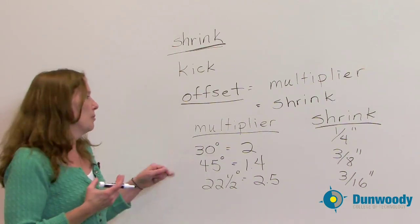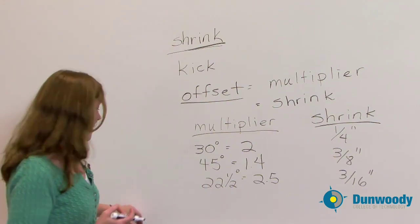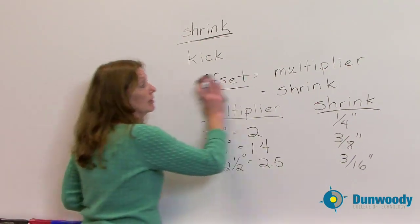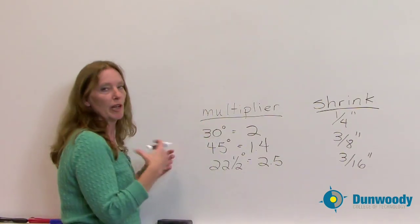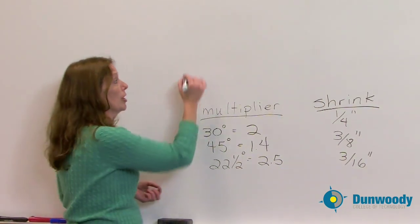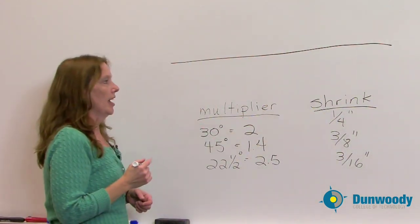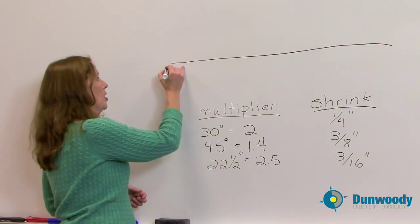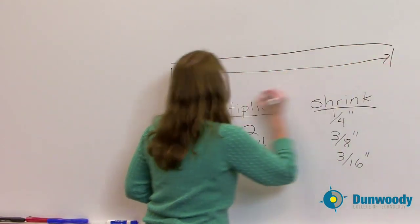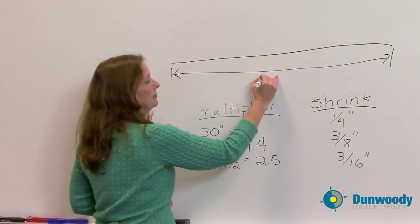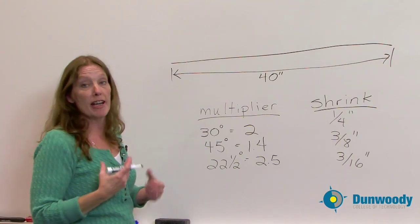What does that all mean? You've got multiplier, you've got shrink. How does that work when I'm bending conduit? Well, I'm going to show you how. I'm going to take a piece of conduit here and I'm going to first show you on the board and then I will actually bend it for you. So I have a length of conduit. And let's say that length is, we'll say 40 inches again. So we have a 40 inch length of conduit.